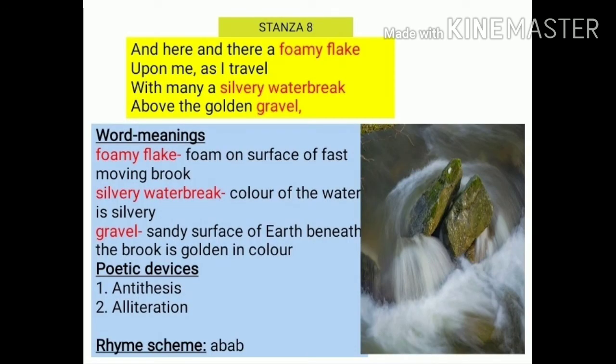Moving further to the eighth stanza: 'And here and there a foamy flake upon me as I travel, with many a silvery water-break above the golden gravel.' The brook is telling us that when it's moving fast, foams are formed on its surface. So above it, it has foams, and when it's traveling it carries those foamy flakes along. 'With many a silvery water-break' — silvery water-break is silver in color, and 'above the golden gravel' — gravel is a kind of sand, so the sandy surface beneath the brook seems to be golden in color.